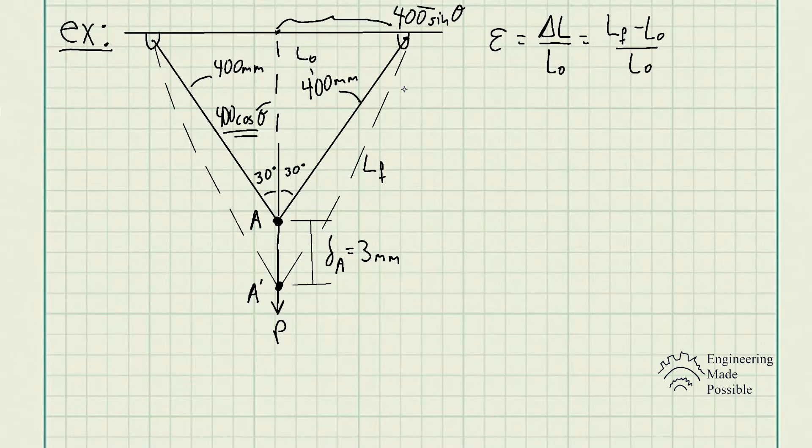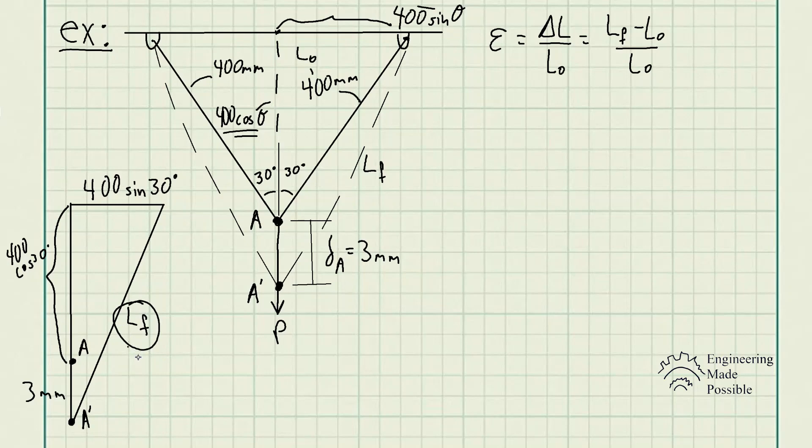All that's left is using Pythagorean theorem to find the final length. Let me draw that separate triangle out just to clarify it. Drawing the larger triangle, we see that this length is 400 sine theta, this portion here is 400 cosine 30 degrees, and then we have this 3 millimeters that it deformed to. Then all we have to do is solve for the final length using Pythagorean theorem.